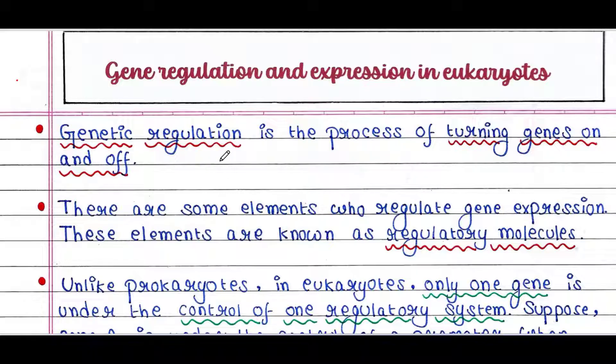Genetic regulation is the process of turning genes on and off. All genes in all cells are not always on — some genes are on, some are off. A tight regulation controls this on and off process. This is called genetic regulation.